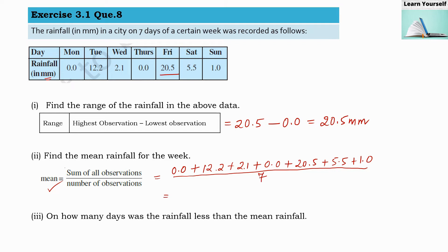Now when we add all these numbers we will get 41.3 divided by seven. So when we will divide this, 41.3 divided by seven, we will get here...